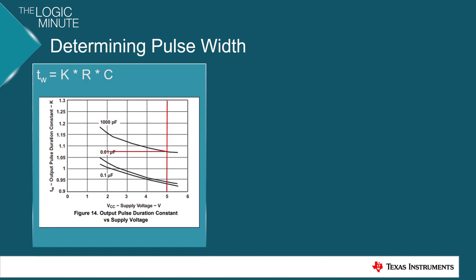So to determine K, you could use this graph from the datasheet, where you could select your supply voltage, and then by going across from the given capacitances, you would find a value for K. And then by varying your resistor value, you could determine what pulse width you want.